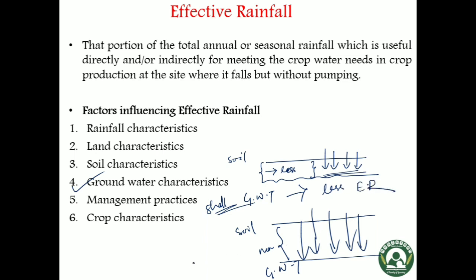But if the ground water table is deep, then there will be more effective rainfall. So for effective rainfall, a deep ground water table is suitable. Coming to management practices, all management practices that enhance soil infiltration rate increase effective rainfall. For example, mulching will hold water for a longer period of time, hence it increases infiltration. So mulching will definitely increase effective rainfall.